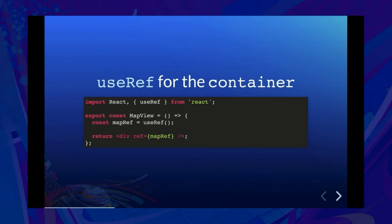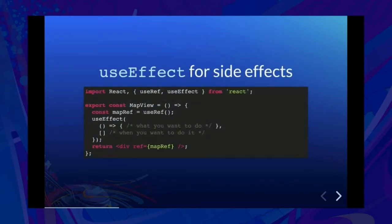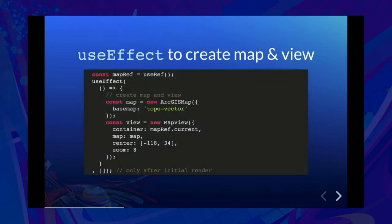Now we need to take a side effect: we need to render the map and the view. React has another hook API called useEffect for when you need to perform some action as a side effect. It takes two arguments — the first is a function representing what you want to do, and the second is an array representing when you want to do it. People get tripped up on this second argument, so we'll be paying special attention to it. We know what we want to do: create a map and view. So we take that code and copy it into the first argument, and instead of using document.getElementById, we just use mapRef.current.